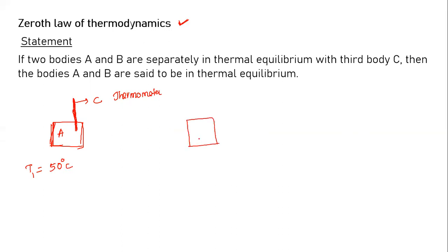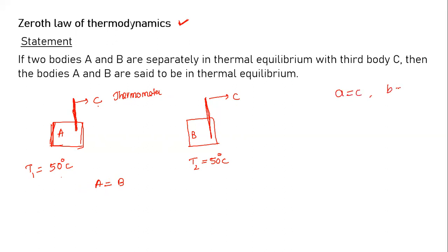Then we take body B and measure its temperature using the same thermometer C. The temperature T2 is also equal to 50 degrees centigrade. So since body A is in thermal equilibrium with C and body B is in thermal equilibrium with C, this implies that A is equal to B — meaning A and B are in thermal equilibrium with each other.